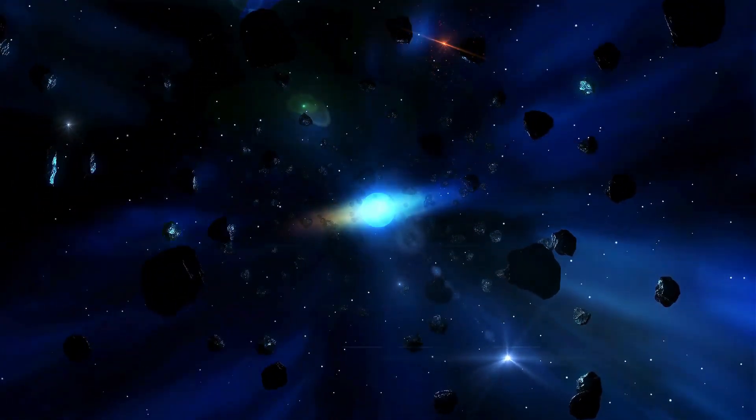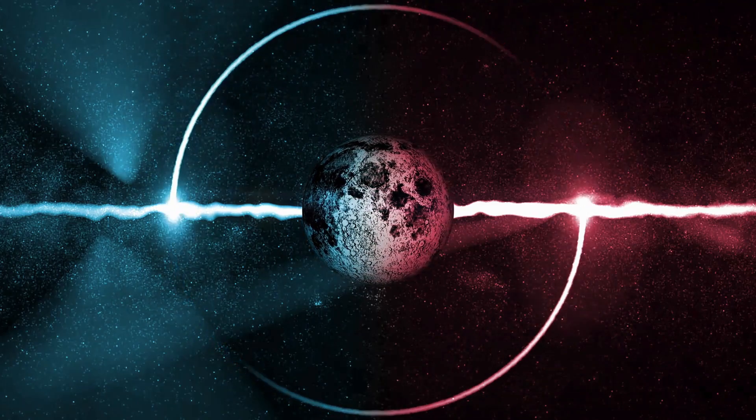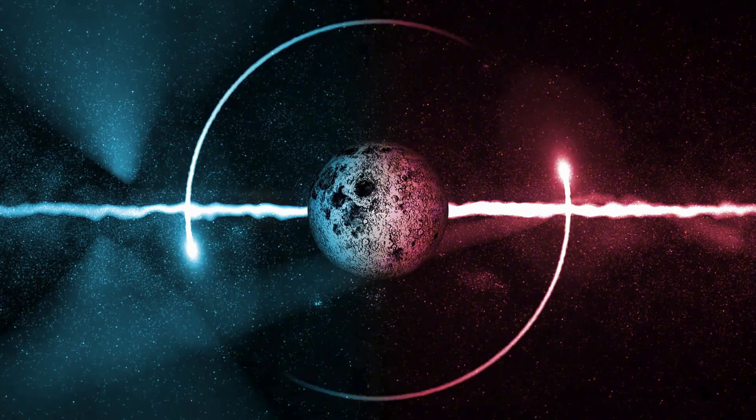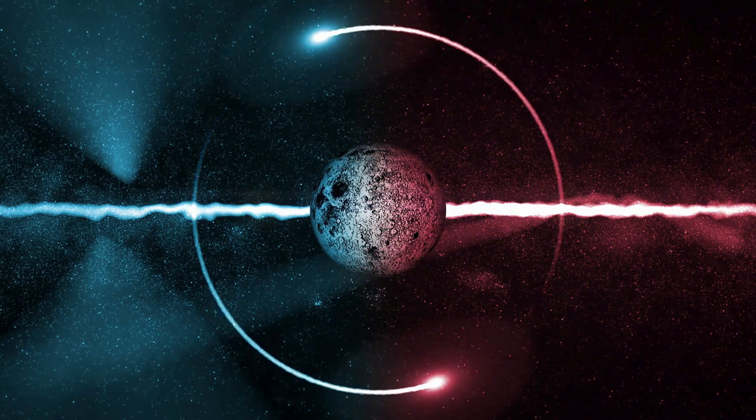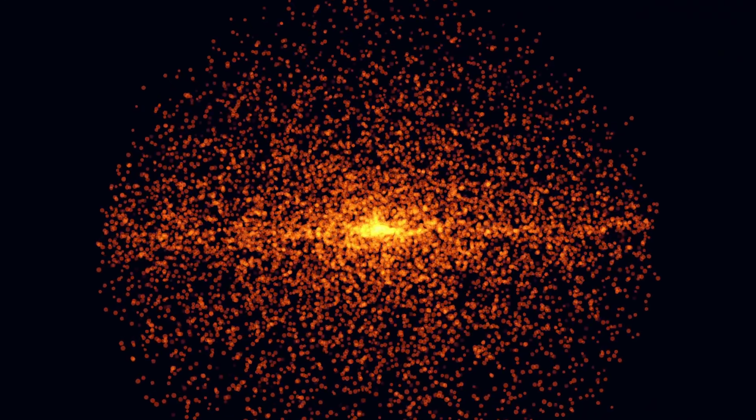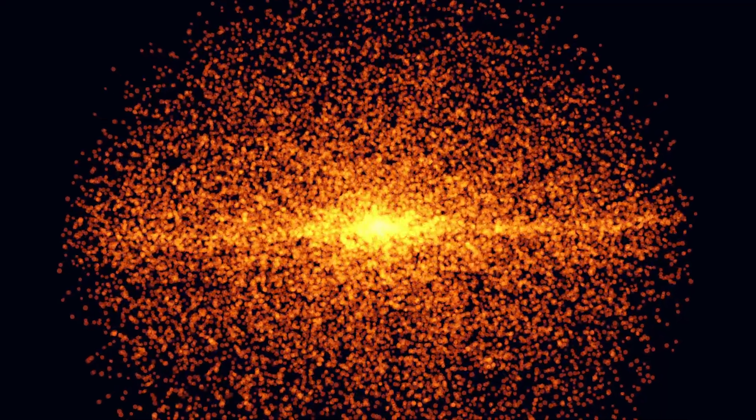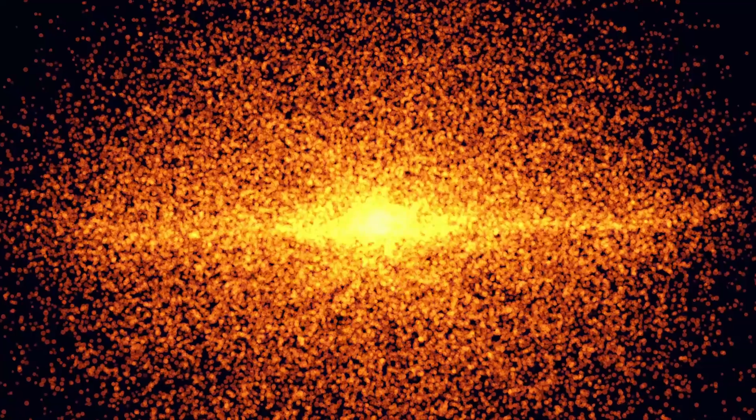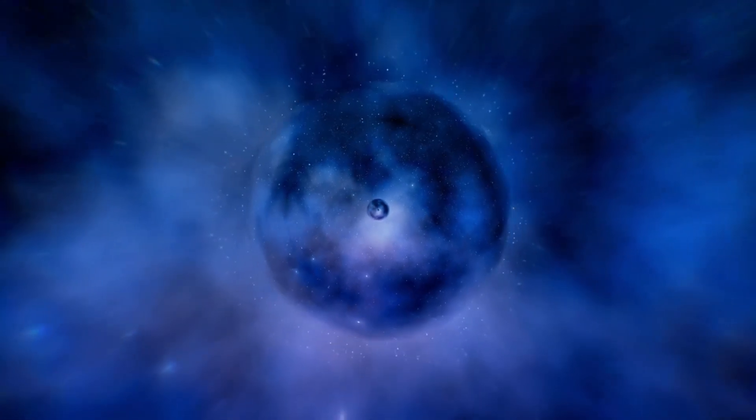Notably, these galaxies are two to three times smaller than the ones observed by the Hubble Space Telescope, which defies the expectations of an expanding universe. According to the Big Bang model, as the universe expands, galaxies should appear larger as they move further away. Yet, the new Webb images show galaxies that challenge this assumption.